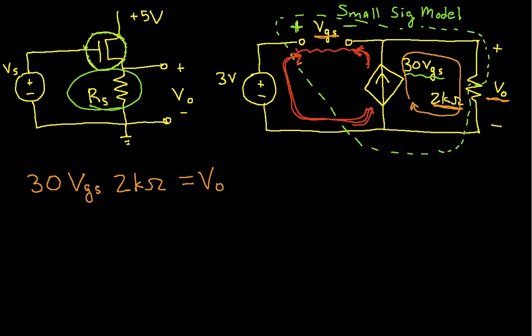Okay, so to do that, to solve for VGS, I will take a loop that goes around the circuit like this, and apply Kirchhoff's voltage law.